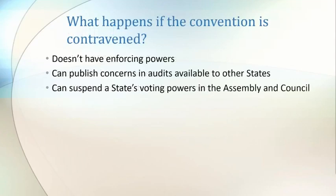One interesting question regarding ICAO is what power it has if one of the member states is failing to comply with the Chicago Convention. As ICAO is an agency of the UN, rather than having direct enforcing power, it instead has measures to pressure states into complying. ICAO can publish information from the results of audits it conducts. Additionally, it has the ability to suspend voting powers in the assembly and council.